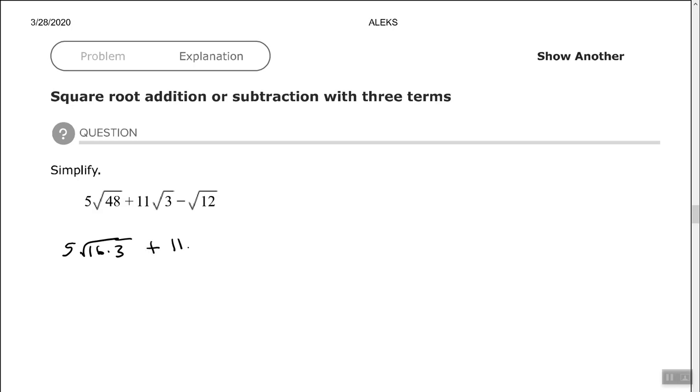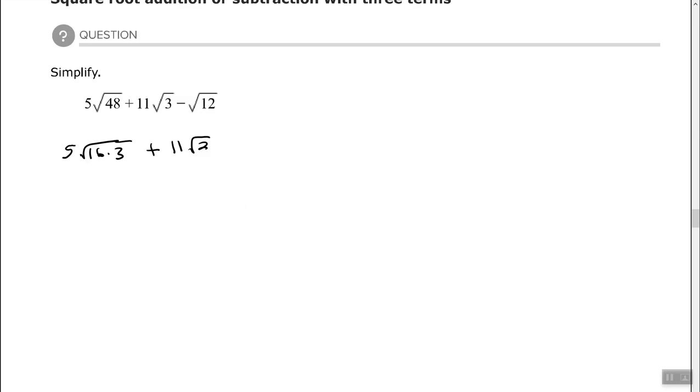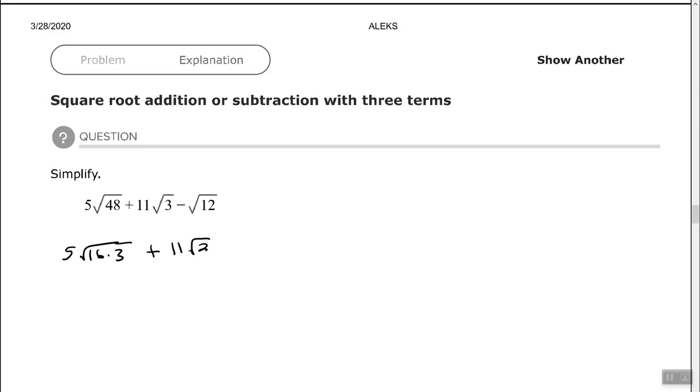Times square root of 3, I'll leave it like it is. And then 12, 4 will go into 12, so let's rewrite that as 4 times 3.